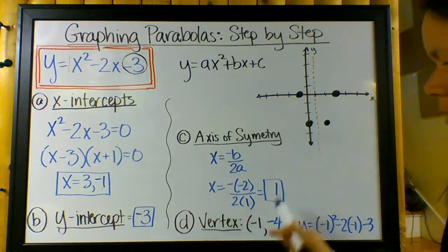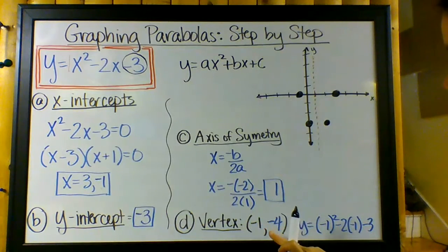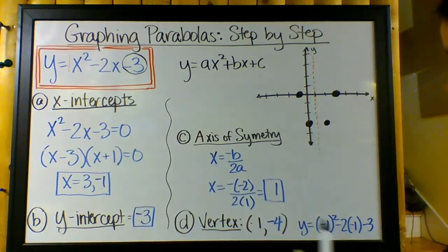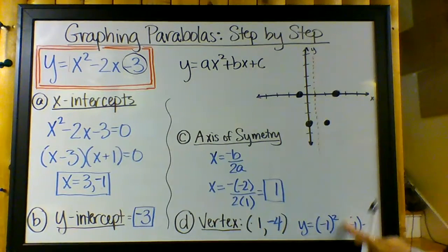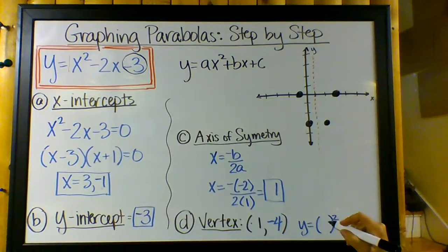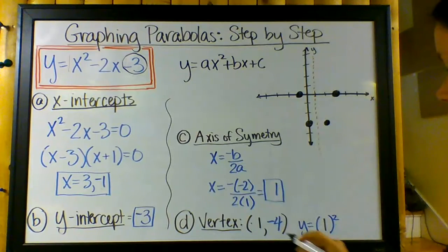So the vertex is, oh, and I plugged this in wrong because I plugged in a negative 1. Let's see what I'm doing here. I'm making mistakes. Let's plug in 1. Still, it should be negative 4. Goodness, I'm good at making mistakes. Do we all know this, though?